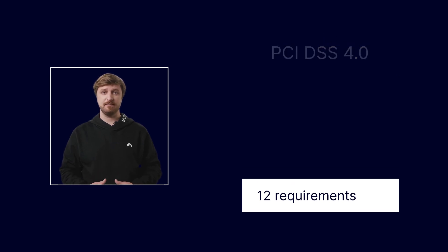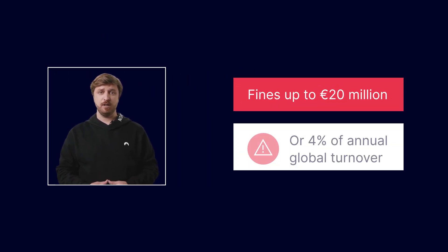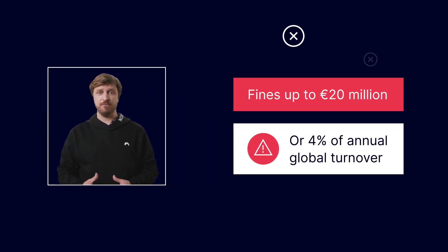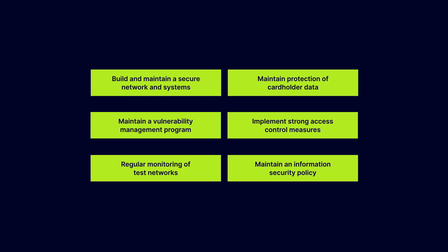Sounds scary? Well then, buckle up, because the frightening part is that a PCI DSS breach is a GDPR breach, meaning that companies can face fines of up to 20 million euros or 4% of their annual global turnover. To simplify things, let's jump into our cheat sheet and overview the six main security controls necessary for PCI compliance.